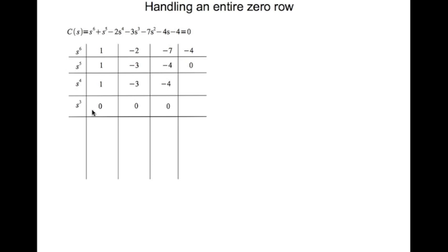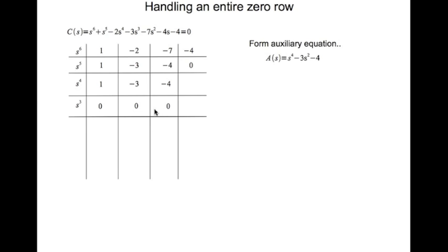When we get to the s^3 row, we find that all elements are zero. This entry is (1 × (-3) - (-3) × 1) / 1 = 0, and the remaining entries are also zero. So how do we handle this?